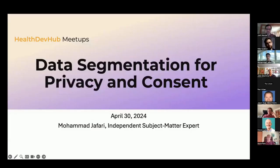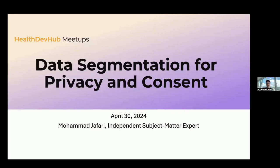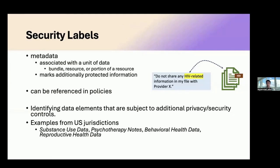I'm going to speak about data segmentation for privacy. This is very adjacent to the conversation we had earlier, and there is a lot of overlap between how consent enforcement works and data segmentation. Security labels are metadata associated with a FHIR unit — it could be a portion of a resource — as a placeholder to mark additionally protected information. All health information is covered by blanket policies, but there are specifically sensitive types of information that require additional protection, and that's how data segmentation works.